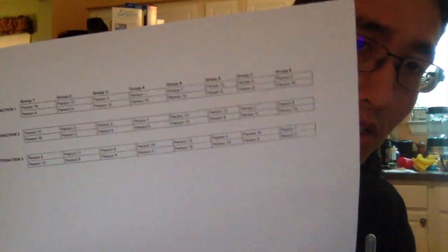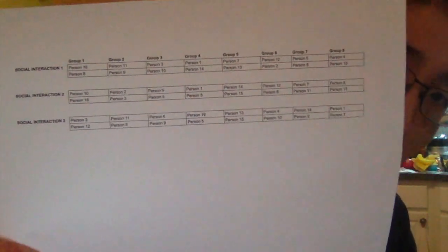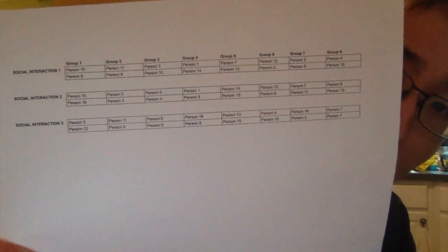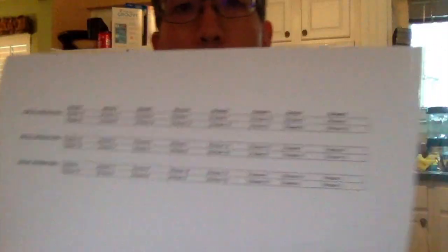Every social interaction you're going to have a swapping of liquids or germs, as you do out in public. If you were doing this in the classroom, you can just have people mingle and swap liquids and make sure they don't interact with the same person twice. But since we're not in the classroom, I made a spreadsheet, and this spreadsheet does not have anybody interacting with the same person twice. For instance, person 16 is going to interact with person 8 for the first social interaction.